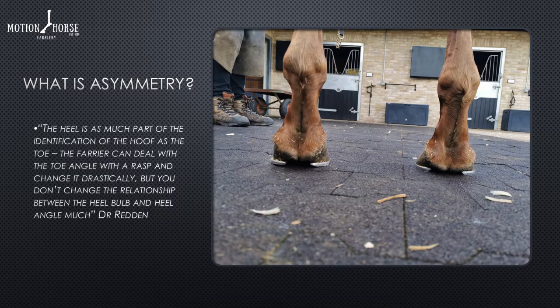There's a great quote from Dr. Rick Redden: 'The heel is as much part of the identification of the hoof as the toe. The farrier can deal with the toe angle simply with a rasp and can change it drastically, but you don't change that relationship between the heel bulb and the heel angle much.' That's a very valid and true point, and this picture sums it up nicely.